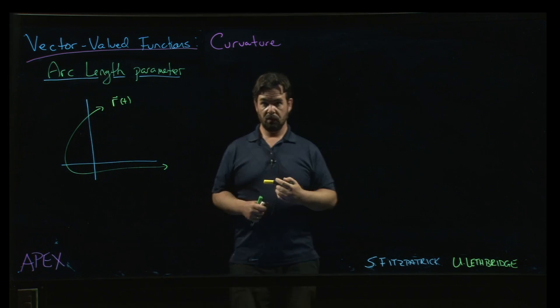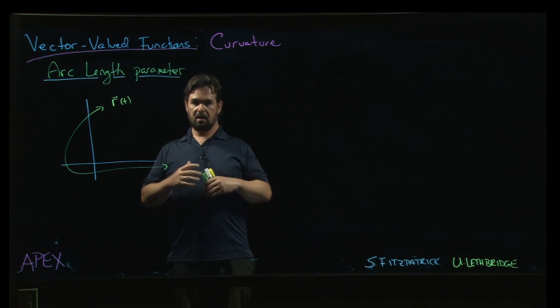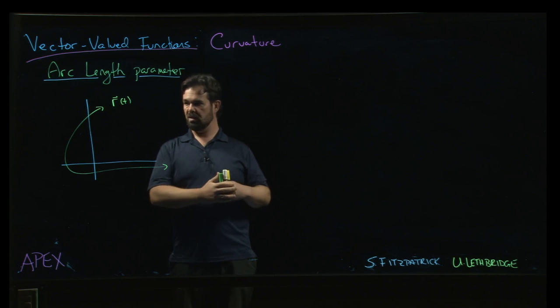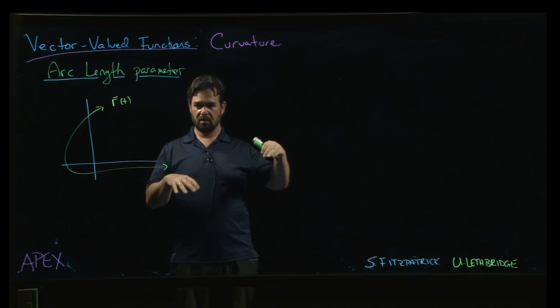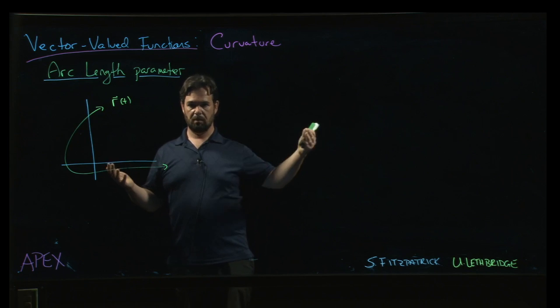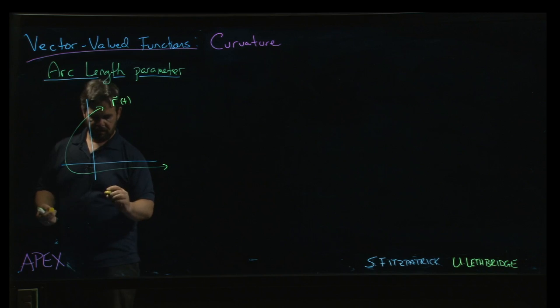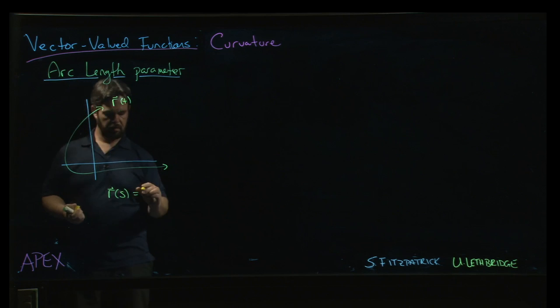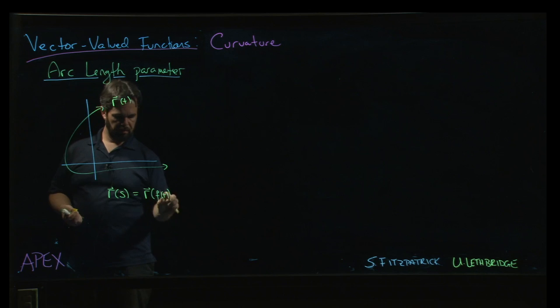One of the things that is often useful to do is to re-parametrize a curve. So often what happens is you take your variable t and you substitute for some other variable. Typically what happens is t will be written in terms of some, usually increasing differentiable function of some other variable. So t will be something like f of u. If I defined some r of s to be r of f of s—let's do it that way, f of s.